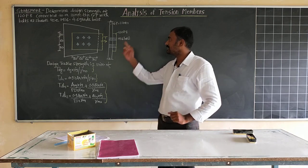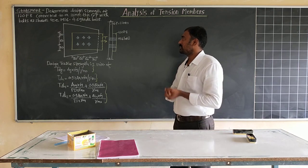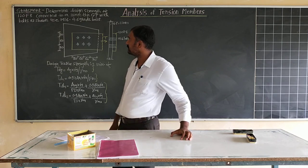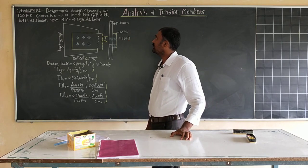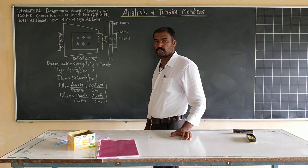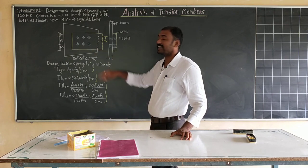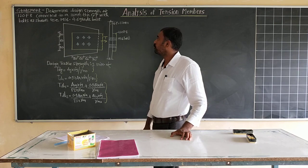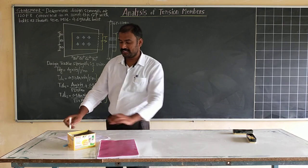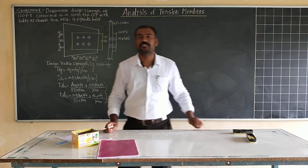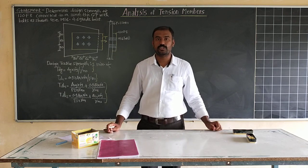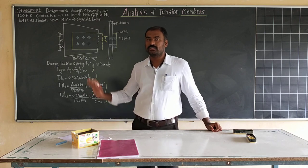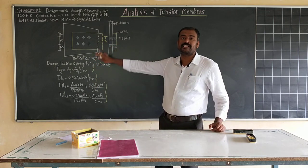The problem statement is: determine the strength of a 120 F8 Indian standard flat connected to a 12 mm thick gusset plate with bolts as shown in the figure. The details of the figure are given in the problem itself. We are to use M16 4.6 grade bolts.